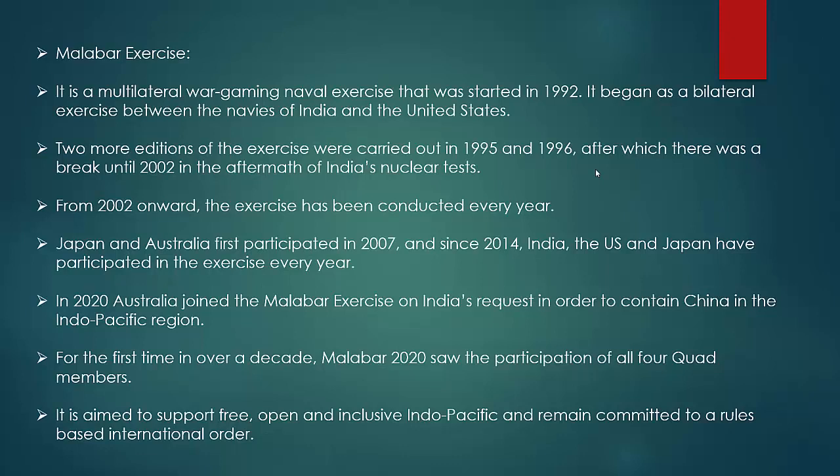In 2020, Australia joined the Malabar exercise on India's request in order to contain China in the Indo-Pacific region. For the first time in over a decade, Malabar 2020 saw the participation of all four Quad members — the first time all Quad members participated in a joint exercise. The same happened again in 2021. It is aimed to support a free, open and inclusive Indo-Pacific and remain committed to a rules-based international order.